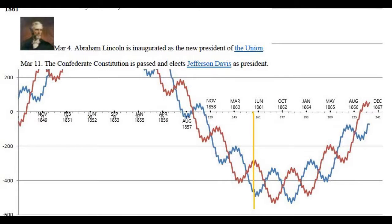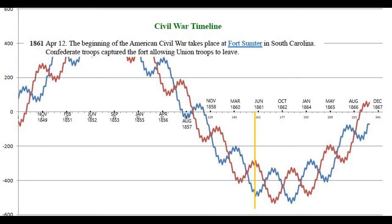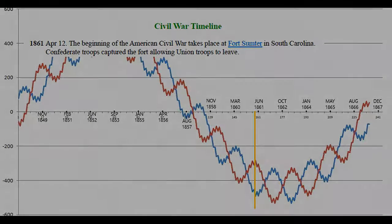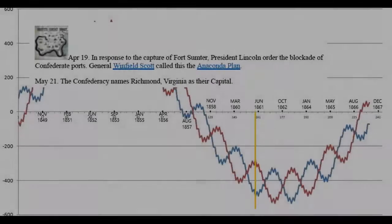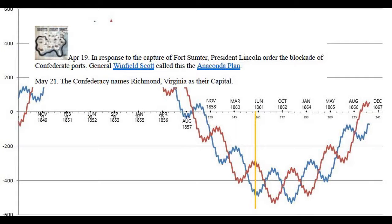On March 4th, 1861, Abraham Lincoln is inaugurated as president of the Union. On March 11th, the Confederate Constitution is passed and Jefferson Davis is elected president. On April 12th, 1861, the beginning of the American Civil War takes place at Fort Sumter in South Carolina — Confederate troops capture the fort, allowing Union troops to leave. On April 19th, President Lincoln orders the blockade of Confederate ports, which General Winfield Scott called the Anaconda Plan.